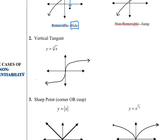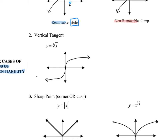Another case of non-differentiability is a vertical tangent. Looking at the cube root of x, as we trace along the curve, we hit a place where the tangent line is actually going vertically. The slope of a vertical line is undefined, so if the derivative is the slope of the tangent line and that slope is undefined, the derivative is also undefined. Places on your graph with a vertical tangent are not differentiable — they can be continuous, but not differentiable.